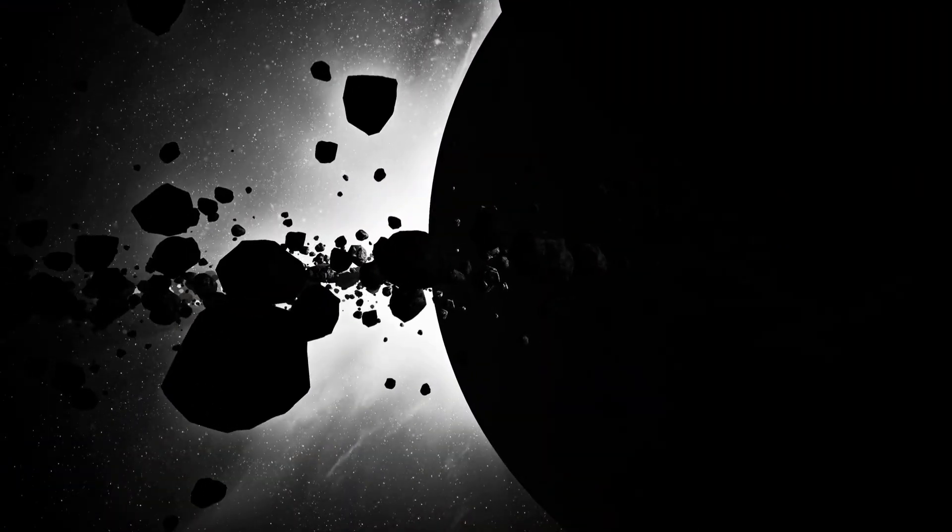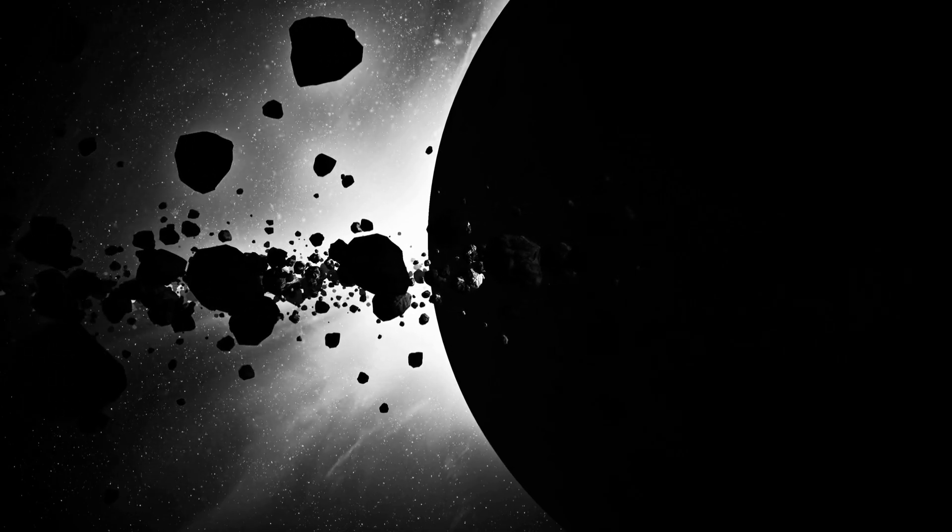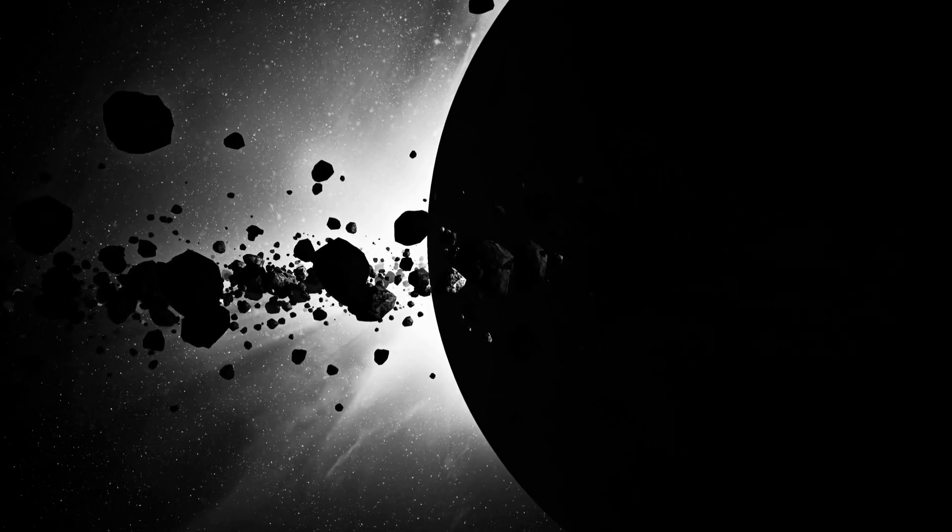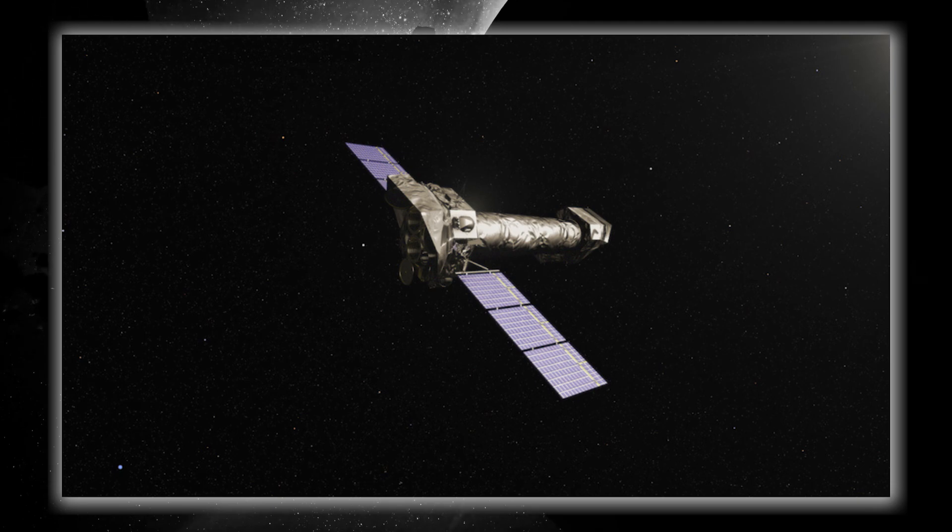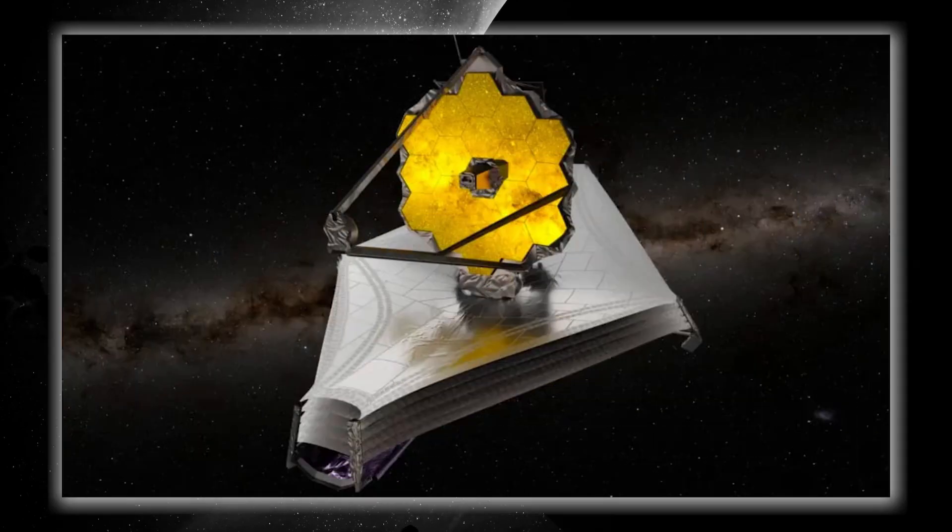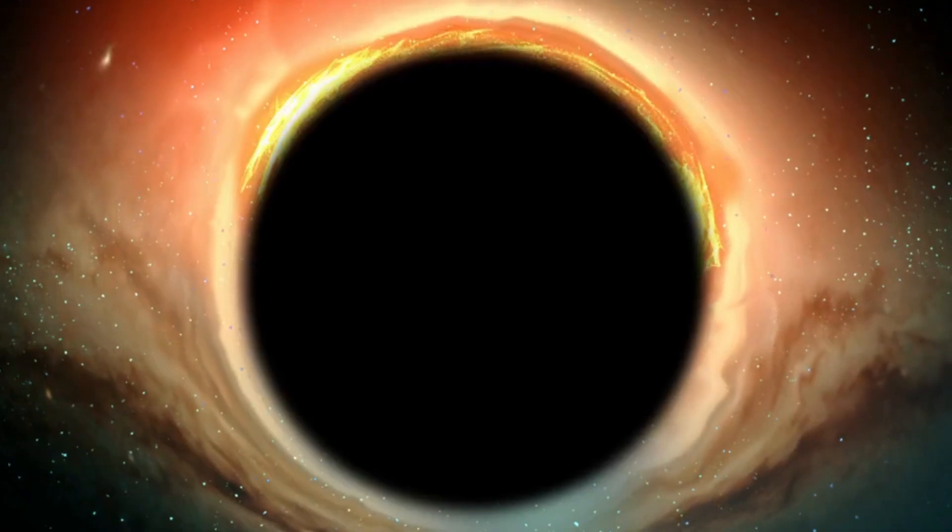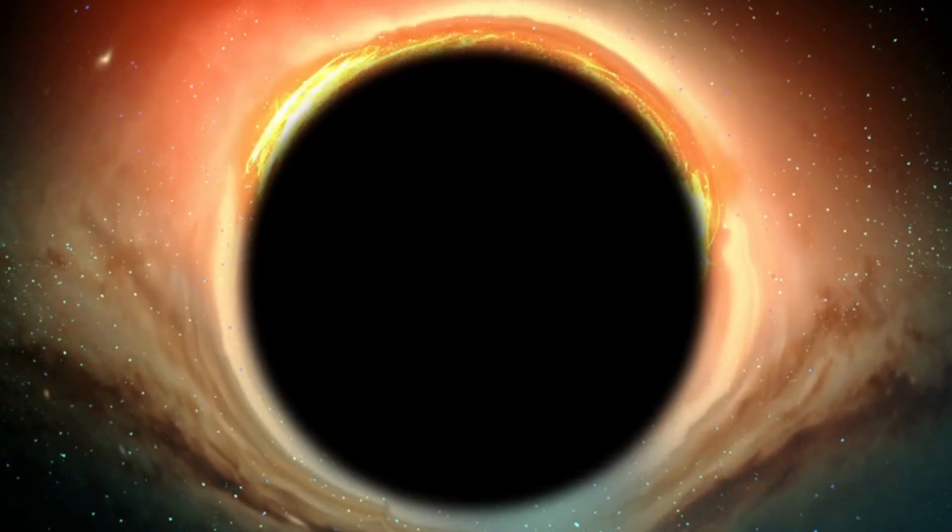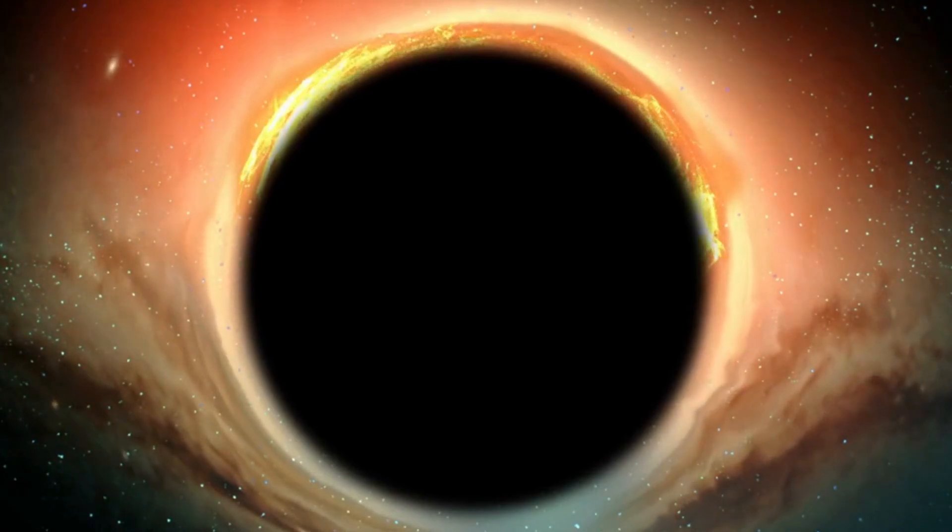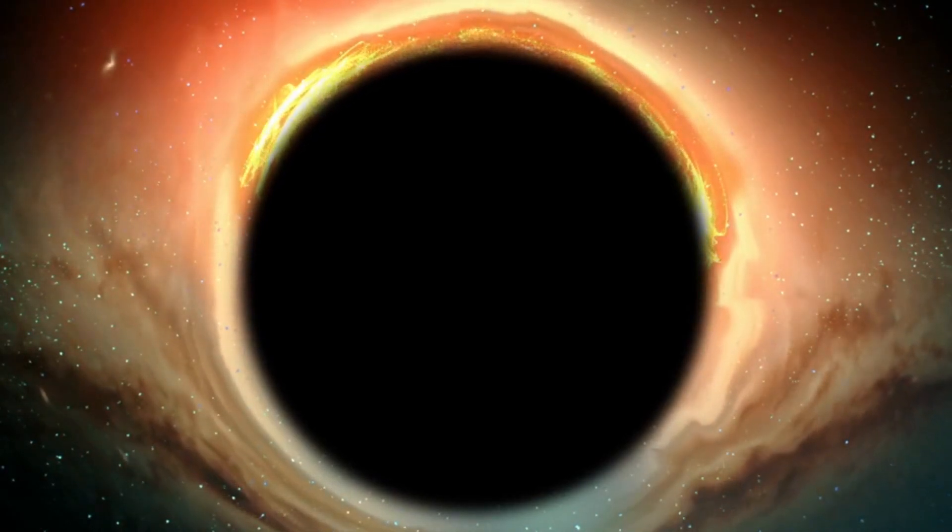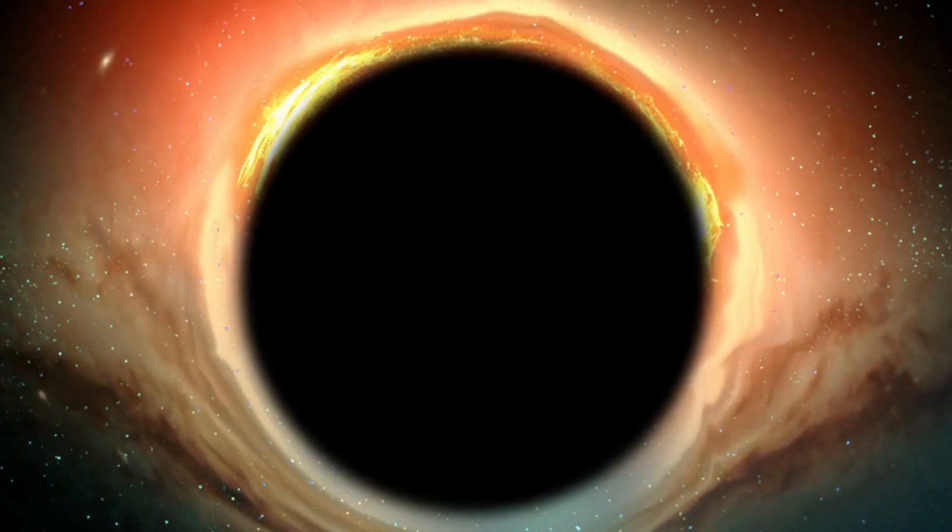But how did this revolutionary discovery come about? The story centers on two impressive space telescopes: the XMM-Newton, operated by the European Space Agency, the James Webb Telescope, and NuSTAR, operated by NASA. These telescopes were focused on a supermassive black hole and witnessed quite a show over several days. They observed fascinating X-ray flares emitted by the scorching hot corona surrounding the black hole.